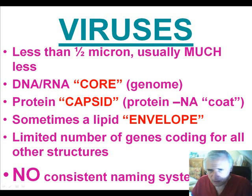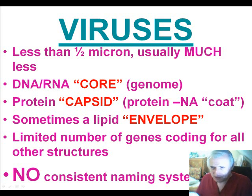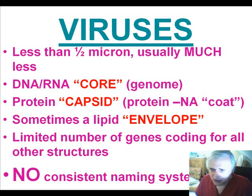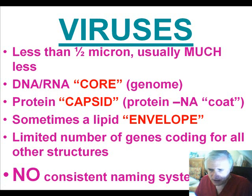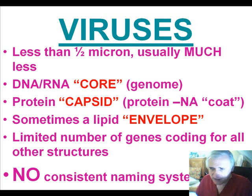Most viruses have a capsid surrounding that core — the protein coat. Sometimes in higher-level viruses there's also a lipid interface surrounding the protein called an envelope. Most viruses have a fairly limited number of genes coding for all the necessary proteins they need for pathogenicity. With the AIDS virus, for example, there are probably fewer than 20 common genes that code for common antigens and protein structures or functions of the virus.